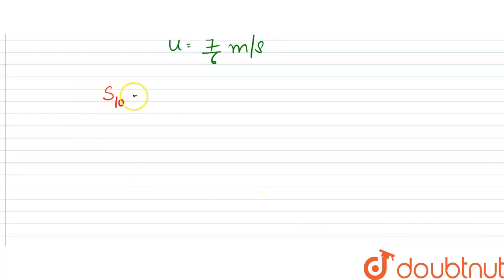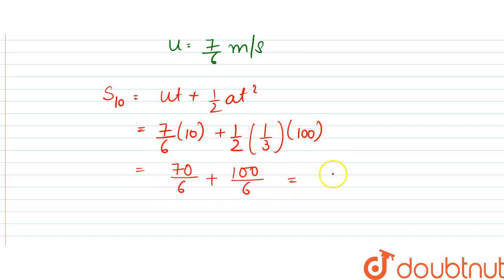Now we will be finding s10, which is equal to ut plus half at square. So u we know is 7 by 6 into 10 plus half into acceleration is 1 by 3 into 10 square, which is 100. So this was equal to 70 by 6 plus 100 by 6, which is equal to 170 by 6.